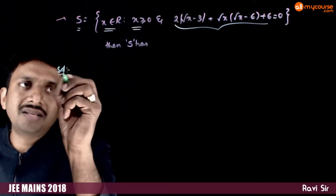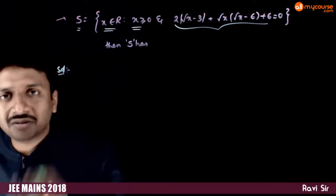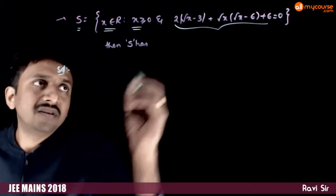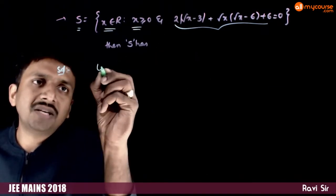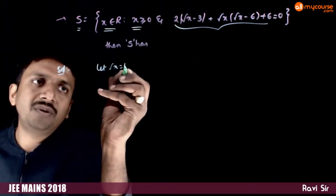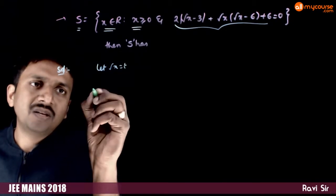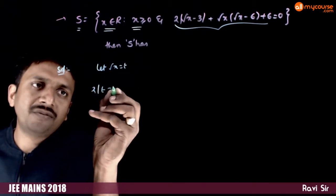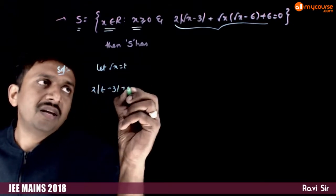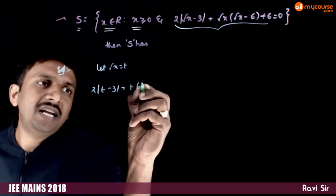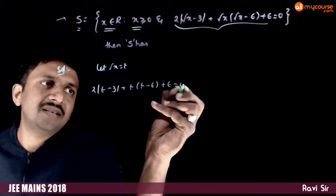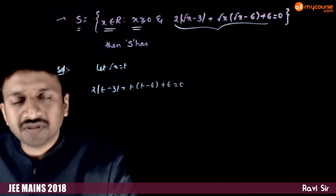Let us solve this equation to get some idea of S. In this equation, let √x = t. So the equation becomes 2|t - 3| + t(t - 6) + 6 = 0, which is 2|t - 3| + t² - 6t + 6 = 0.